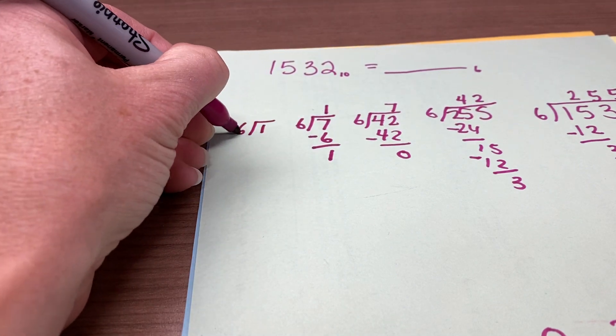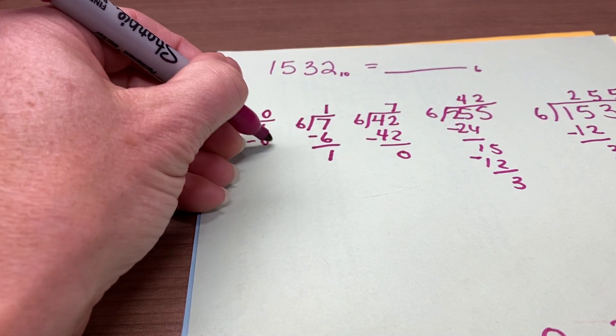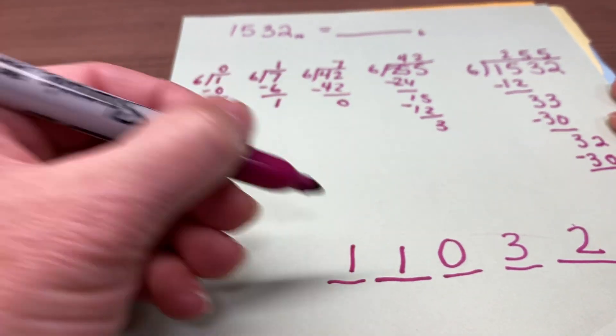1 divided by 6, doesn't go in. Remainder 1, that is this place value.